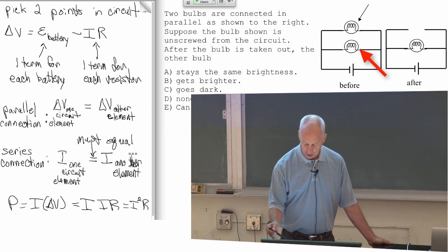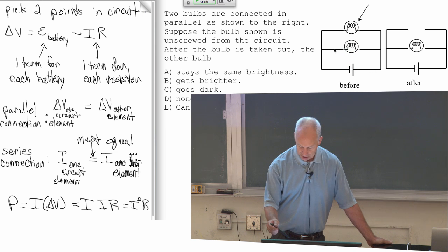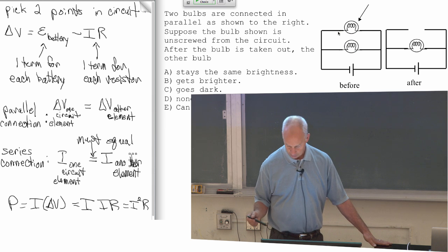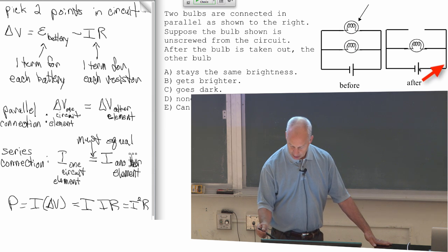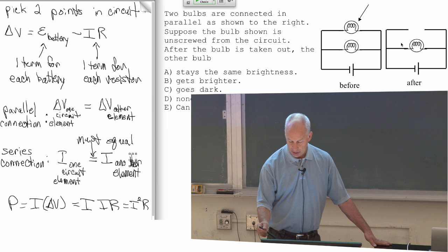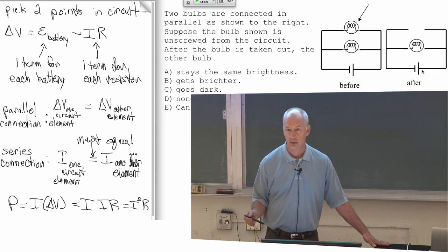So across this bulb you go from one and a half volts down to zero. Across this bulb you go from one and a half volts down to zero. What happens when I pull that out? This is still one and a half volts all the way. This is still zero all the way. This thing has not changed because the voltage across it is the same as it was.